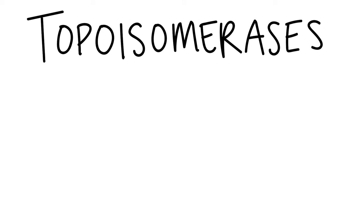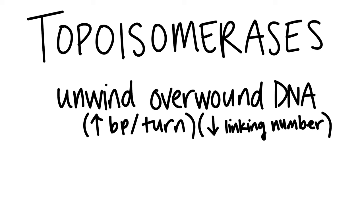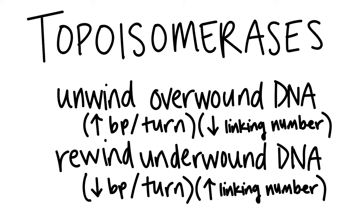Topoisomerases are a class of enzyme that usually restores DNA to its relaxed state. This means that topoisomerases unwind overwound DNA strands, reducing the linking number back to the preferred 10.4 base pairs per turn, or rewind underwound DNA strands, increasing the linking number back to 10.4 base pairs per turn. Topoisomerases work by breaking one or two DNA strands and passing the same number of DNA strands through the break. This change results in an increase or decrease in the linking number of our topologically constrained circular DNA.